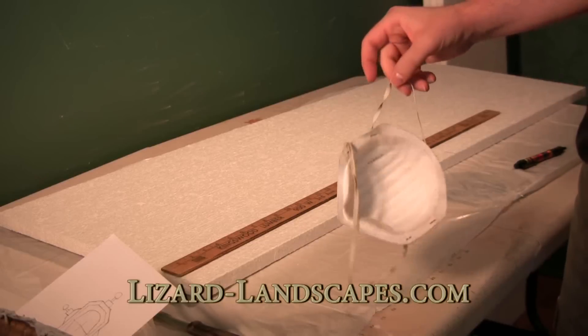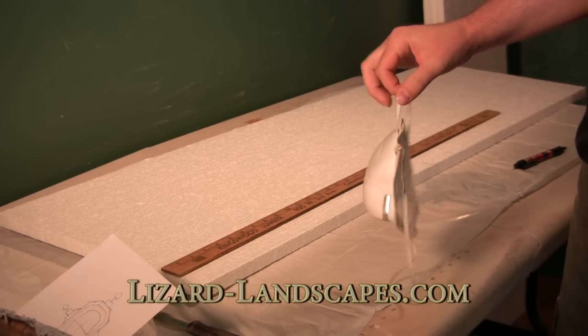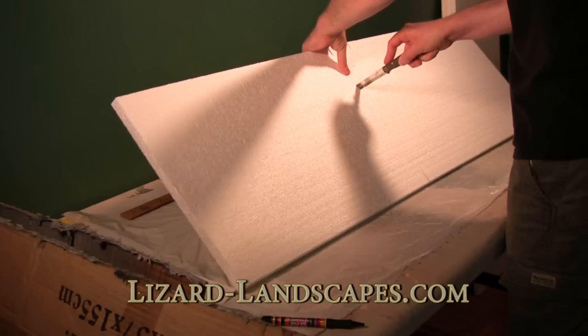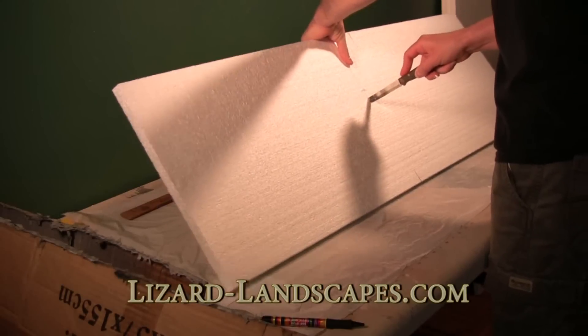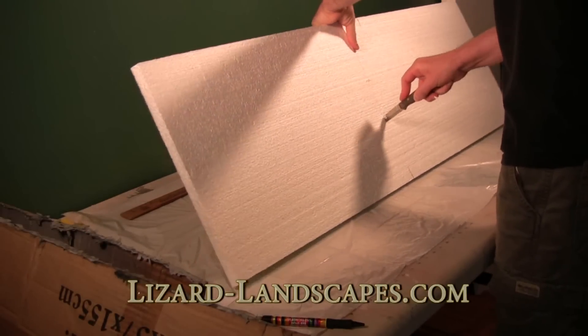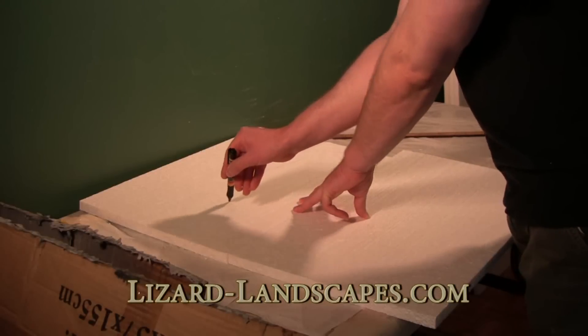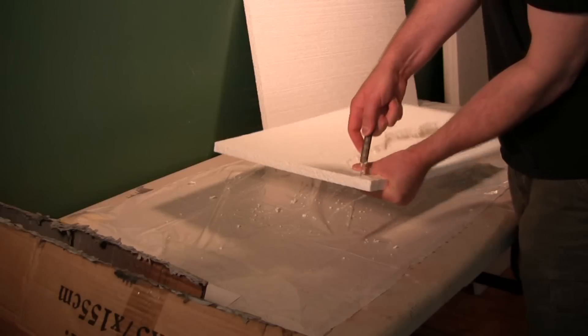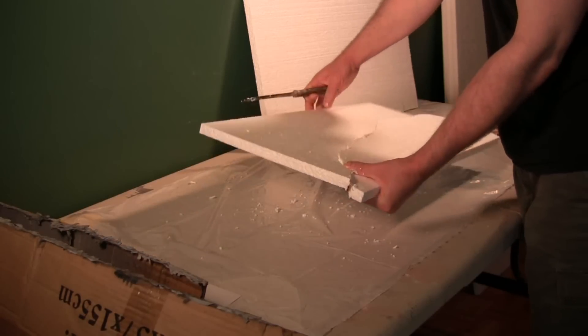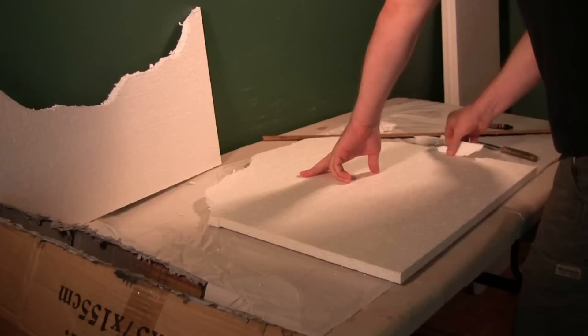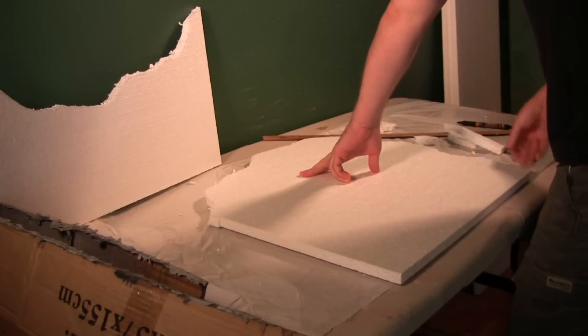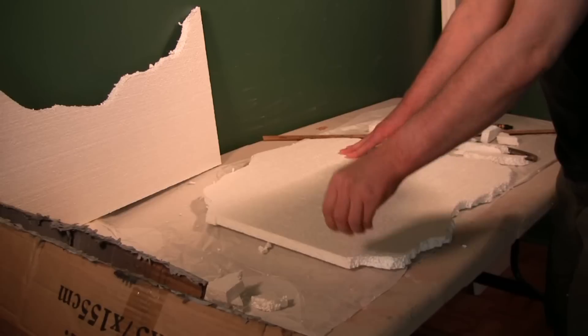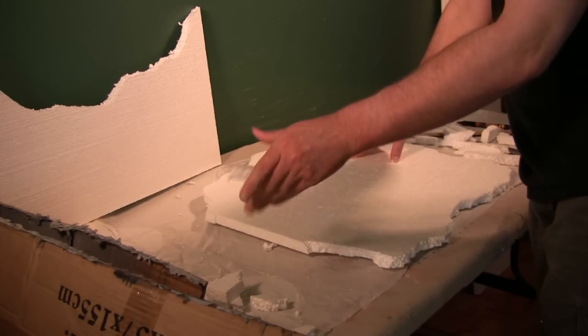First, you want to wear one of these dust masks to protect you from the dust. What I'm doing here is measuring out on a sheet of polystyrene. These sheets didn't come wide enough, so I ended up using two. I'm cutting out the second piece to effectively widen the landscape. You'll have to figure out how long, how deep, and how wide you want the landscape to be.